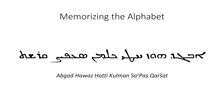Here's a popular way to memorize the alphabet — pretty much the whole alphabet strung together into made-up words. These words don't mean anything and don't translate. Looking on the screen from right to left, you have: Avgad, Hawaz, Khati, Kulman, Sapaz, Karshat. One more time: Avgad, Hawaz, Khati, Kulman, Sapaz, Karshat.